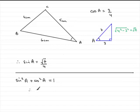So therefore, we've got sine squared of A must be equal to 1 minus cos squared A, if we just subtract cos squared A from both sides. Now, we know what cos of A is, it's 3 quarters.